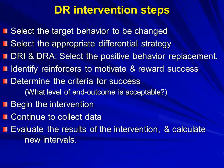We then select the appropriate DR strategy. If it happens to be DRI or DRA — the incompatible and alternative versions — we select a positive behavior to replace the one of concern, and define that positive behavior in observable and measurable terms. We then identify reinforcers that will motivate this youngster, determine our criteria for success, and continue to collect data — building on our baseline — to determine whether we've met success or to calculate new reinforcement intervals.